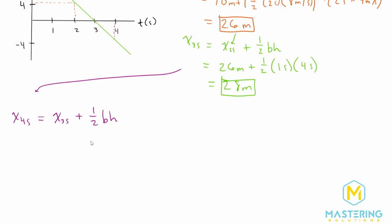So now when we do this, we have 28 meters for x at 3 seconds, and we're going to add one-half times the base, which is 1 second again, times the height, and the height is a negative 4 meters per second.